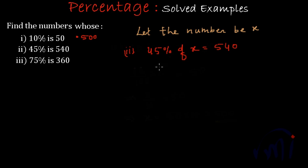So from here we will get 45% is actually 45 by 100 of x, that is this is multiplied by x, is equal to 540. And from here we will get x is equal to 540 multiplied by 100 by 45.